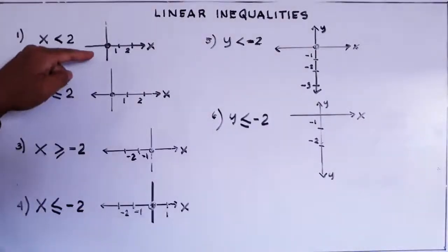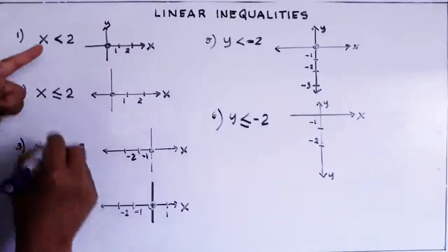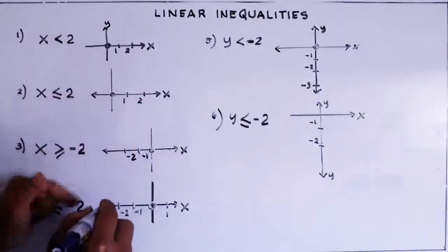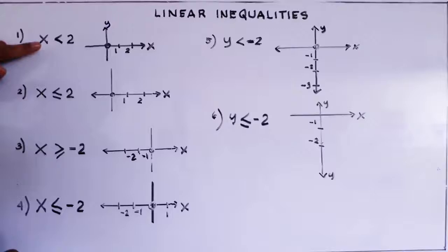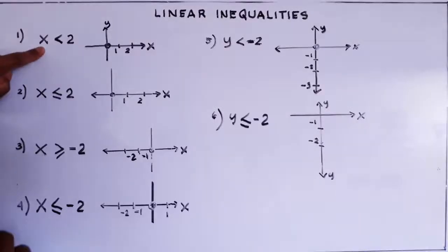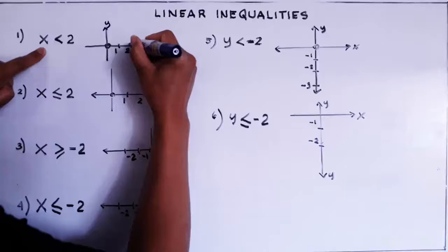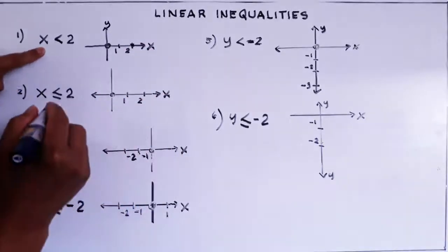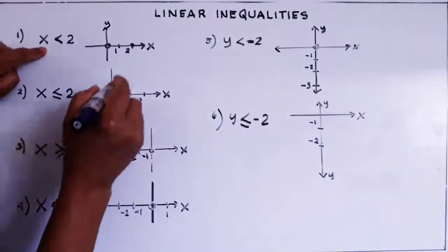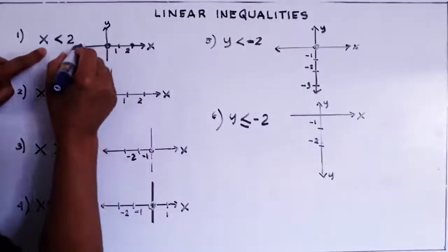We have the x-axis and the y-axis. If you have an x inequality with a number, you find that number on the x-axis. So on the x-axis, there is the two. We cannot draw a horizontal line here because the variable is x.